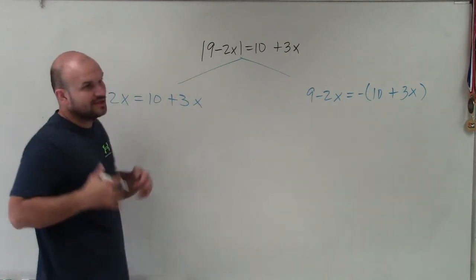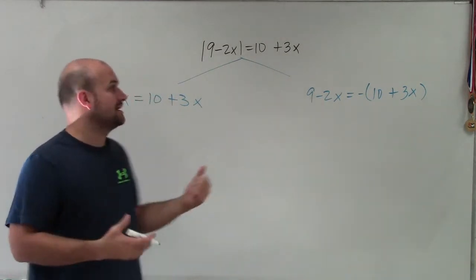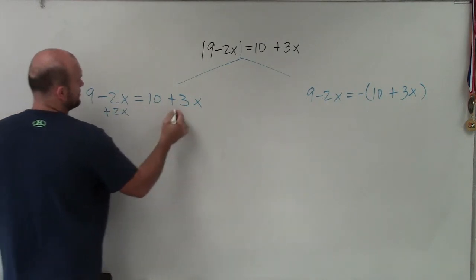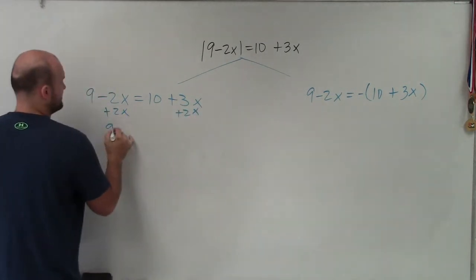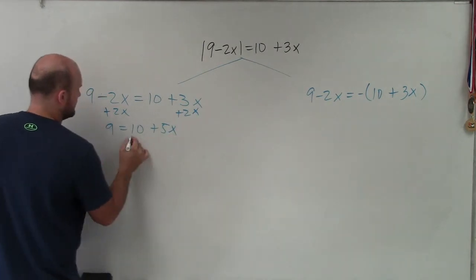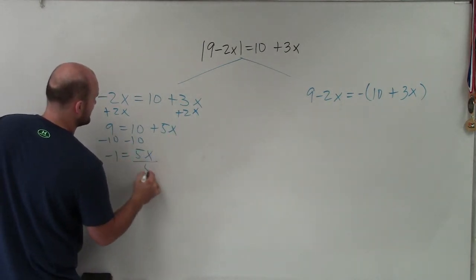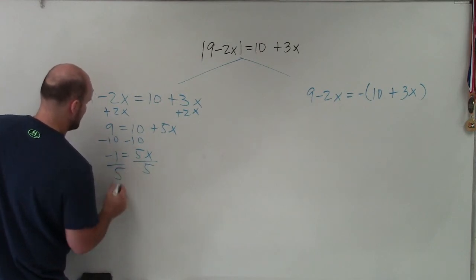But basically, what I'm going to do is now solve each side separately and then check my answer to make sure that I can see that they're correct. So when doing that, I will just add 2x here, add 2x. So I have 9 equals 10 plus 5x minus 10 minus 10. Negative 1 equals 5x. Divide by 5, divide by 5. So x equals a negative 1 fifth.